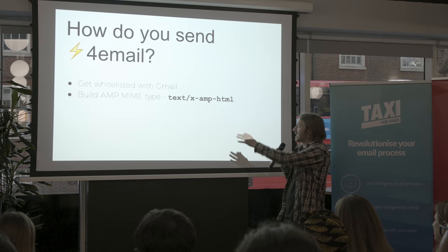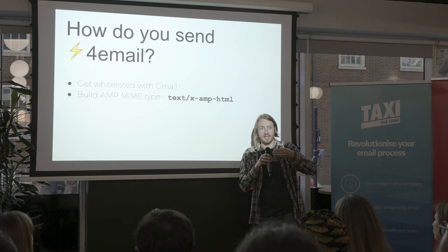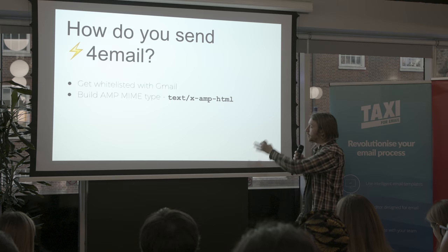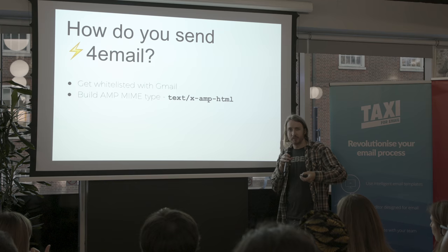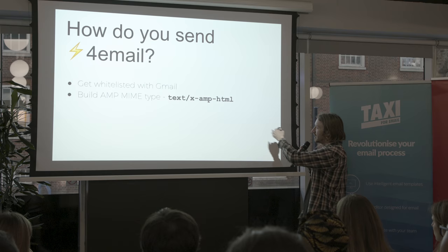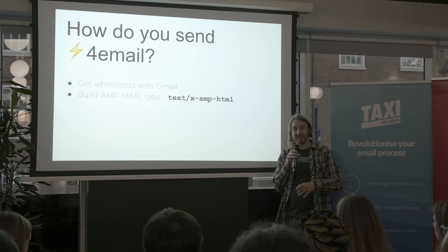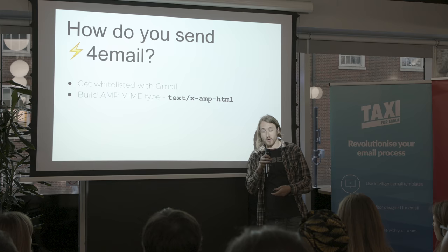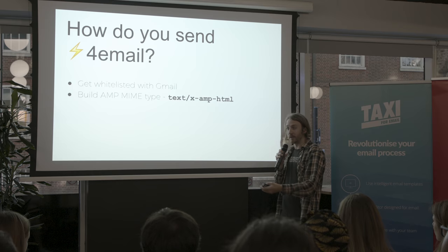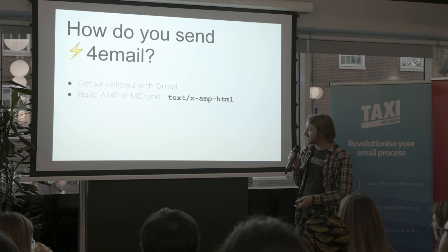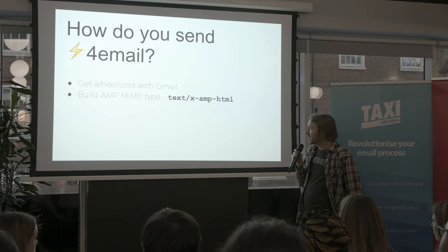Then you've got to build this extra MIME type, which is xamp.html. Currently you're probably sending emails with plain text and HTML — if you're feeling fancy, you might be putting an Apple Watch MIME type in there as well. Now we've got this extra amp email. In terms of what's being sent it's not that complicated — you define the plain text, put the content, define the HTML, put the content, define the AMP MIME type, put the content. But building that into an ESP is more complicated because you've got to do documentation, build a user interface, and so on. I'd expect API-based, back-end focused ESPs to be doing it first.